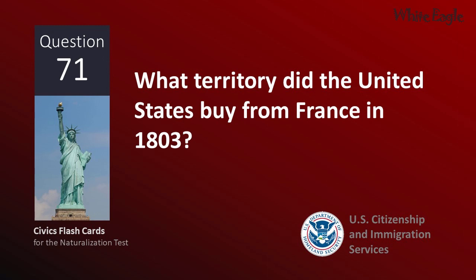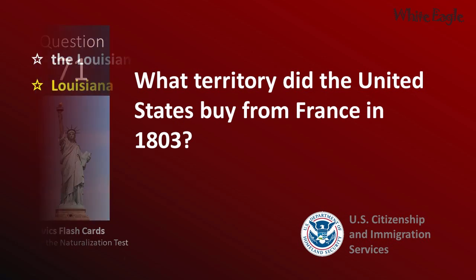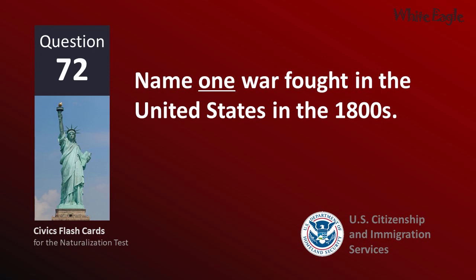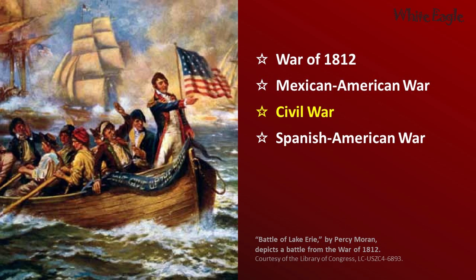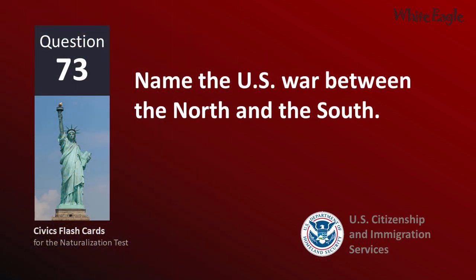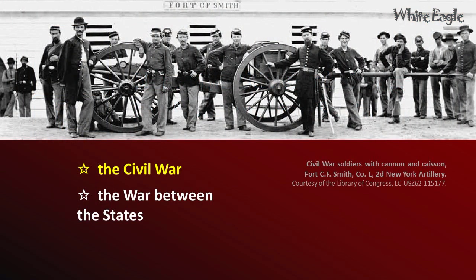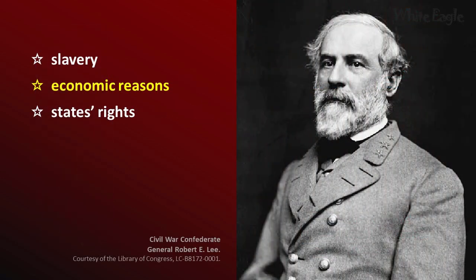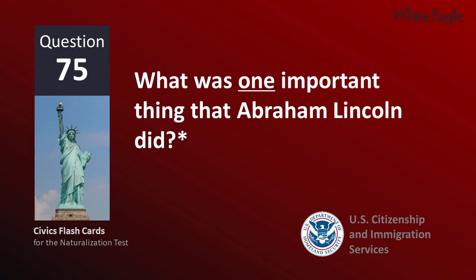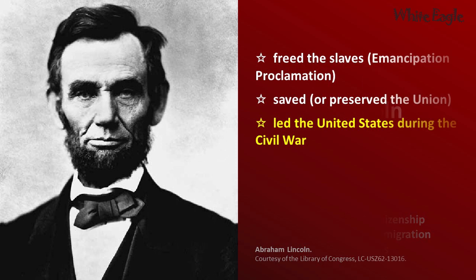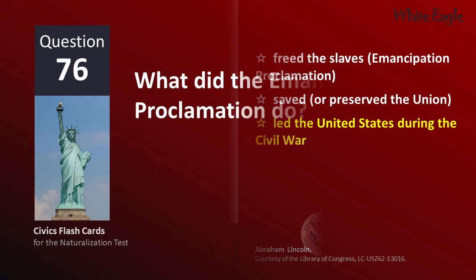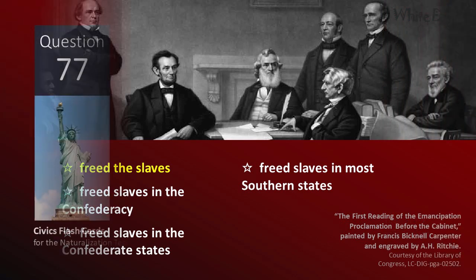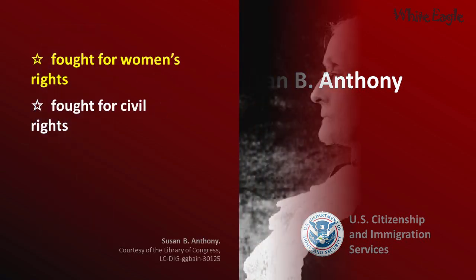What territory did the United States buy from France in 1803? Louisiana. Name one war fought by the United States in the 1800s. Civil War. Name the U.S. war between the North and the South. The war between the states. Name one problem that led to the Civil War. Economic reasons. What was one important thing that Abraham Lincoln did? Led the United States during the Civil War. What did the Emancipation Proclamation do? Free the slaves. What did Susan B. Anthony do? Fought for women's rights.